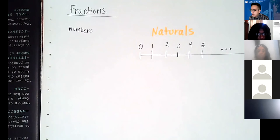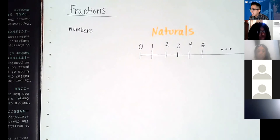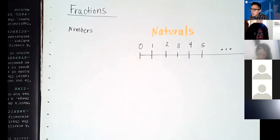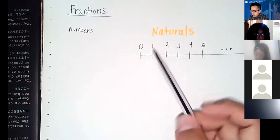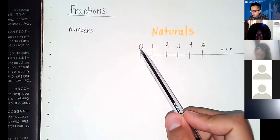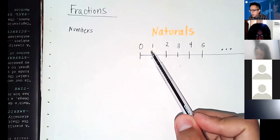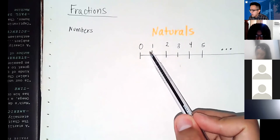As societies developed we needed to expand the number system to include zero. You could think about it as: if we're counting objects we have, zero is like having nothing. But I don't want you to confuse zero and nothing because they're not exactly the same — zero is a number, it is something. You could have one chicken, eat that chicken, and go back to zero.